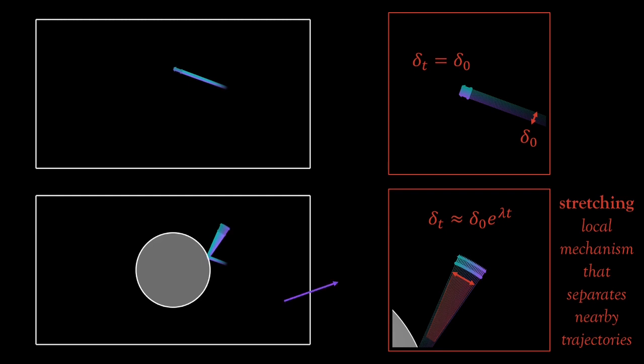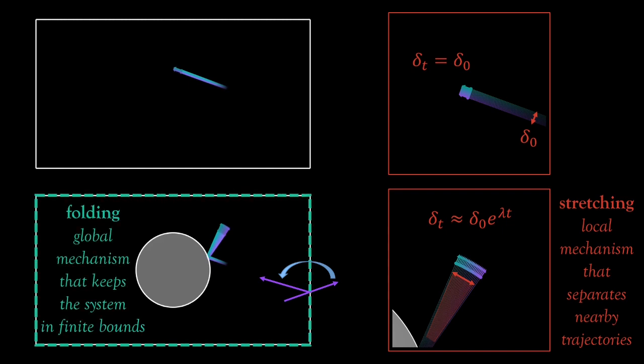Now, in the billiard, every time there is some trajectory that tries to escape, the walls keep it inside, as if they fold it back in. Therefore, there is a second mechanism that acts on a global level and keeps the system in finite bounds. This mechanism is called folding,